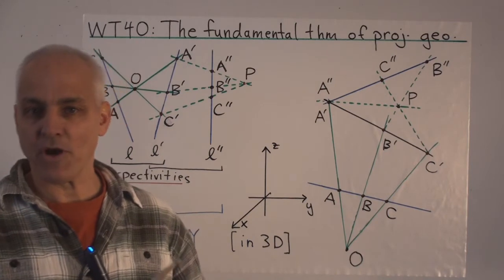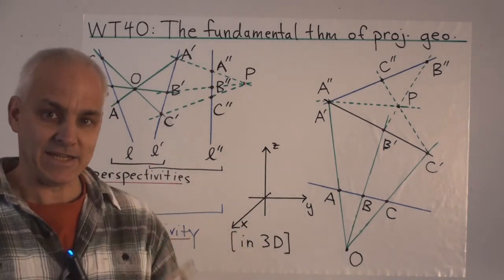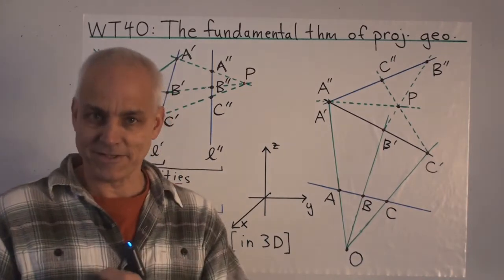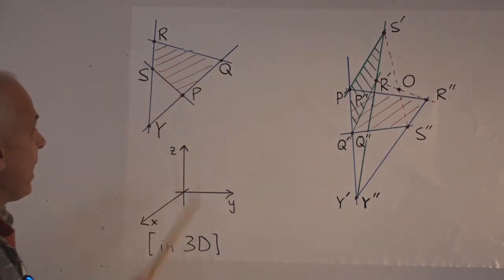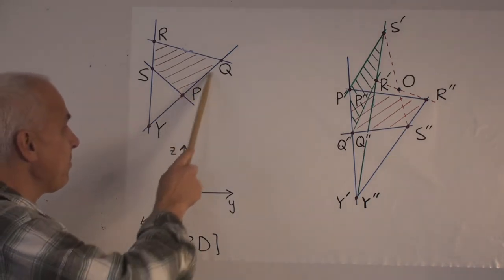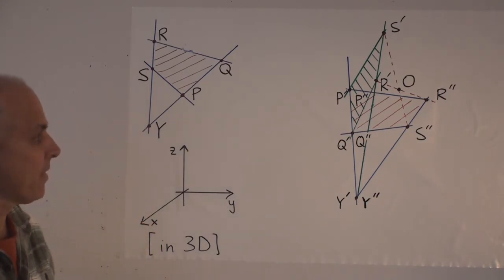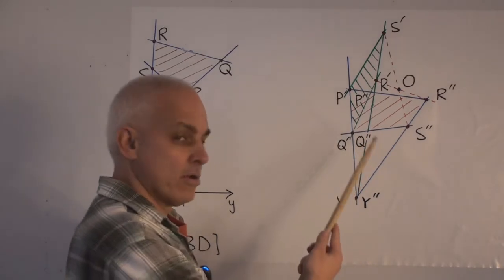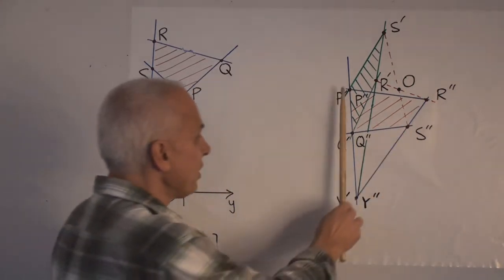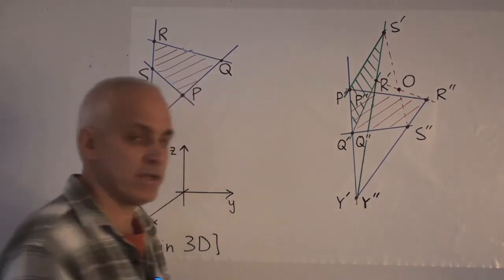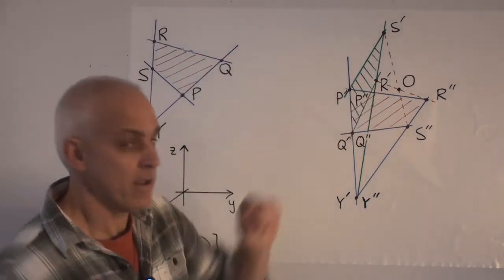So that's the fundamental theorem for projective geometry on a line. Now we want to jack that up to thinking about planes, and instead of having three points, having four points. Suppose our initial quadrangle is P, Q, R, S. These four points are assumed to be in a plane, which implies that lines PQ and RS intersect at some point Y — that's going to be important. Over here is an image quadrangle: P double prime, Q double prime, R double prime, S double prime. We'll assume these two lines also intersect at a point Y double prime, and we'd like to see how to connect this quadrangle to this one via a projectivity.